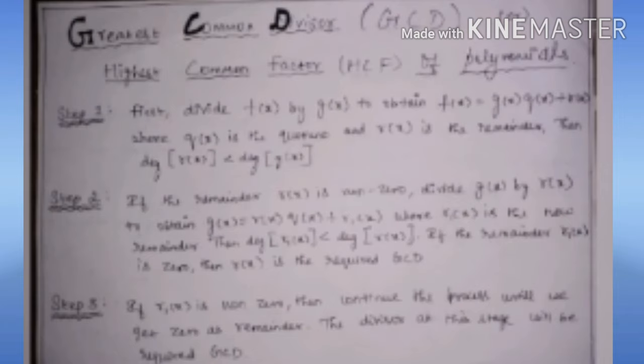Until R1(X) becomes zero — that is, the new remainder becomes zero — that will be called the required GCD. Otherwise, we repeat the steps again and again until we get the remainder to be zero. Step 3: if R1(X) is non-zero, continue the process until we get zero as the remainder. This is similar to simple division — we keep dividing the expressions F(X) by G(X) until the remainder is zero, and that is called the GCD.